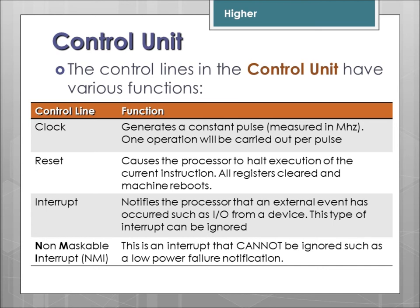The reset line causes the processor to halt whatever it's doing, halt the execution of the current instruction, clear all its registers, and return to its initial state. The interrupt line is triggered when some type of external event has happened from a peripheral or device. The processor can decide whether to deal with this interrupt or not — if it does, it halts execution, loads the set of instructions to deal with the interrupt, and then services it. However, there is also a non-maskable interrupt, which cannot be ignored and must be dealt with immediately. Examples include a low power notification or an overheat notification.